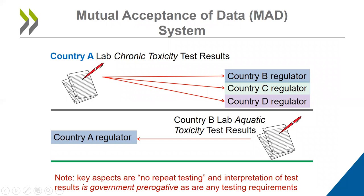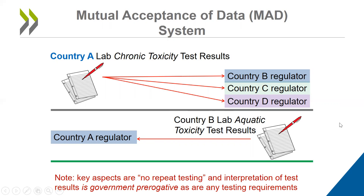The mutual acceptance of data works as follows. For example, here we have country A, which has generated chronic toxicity test results for a particular substance. The results of this study can be submitted by industry to regulators in country B, C, and D when they are part of the mutual acceptance of data system, and these studies then need to be accepted by these regulators. Conversely, if country B produces aquatic toxicity test results in a GLP facility, then this can be submitted to the regulator in country A. The key aspect is no repeat testing. However, the interpretation of the test results is a government prerogative, as are any testing requirements that a country may put into place for its chemicals management framework.